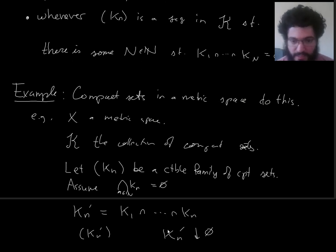Since the kns intersect emptily, these guys intersect emptily also. But now we can say they down arrow to the empty set. Because they are also nested. When you define like this, they become nested.